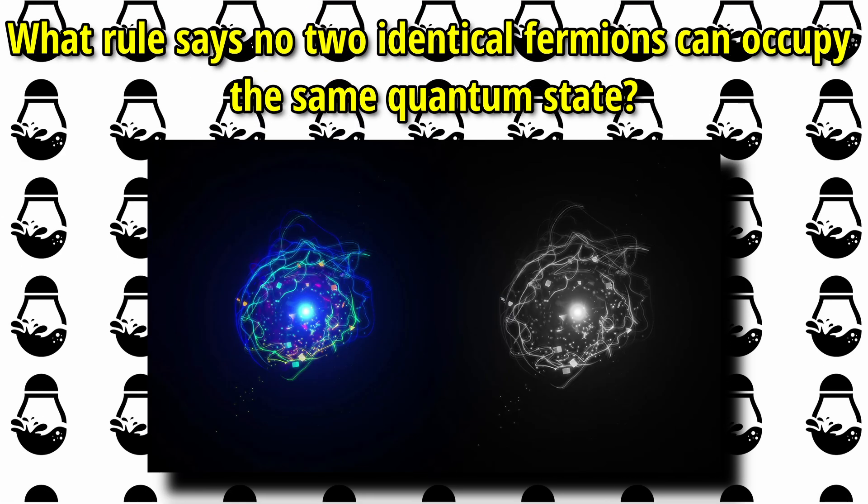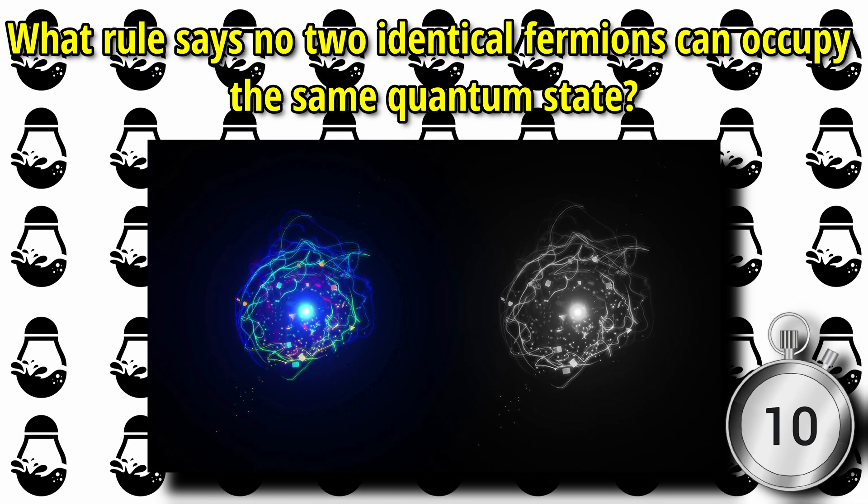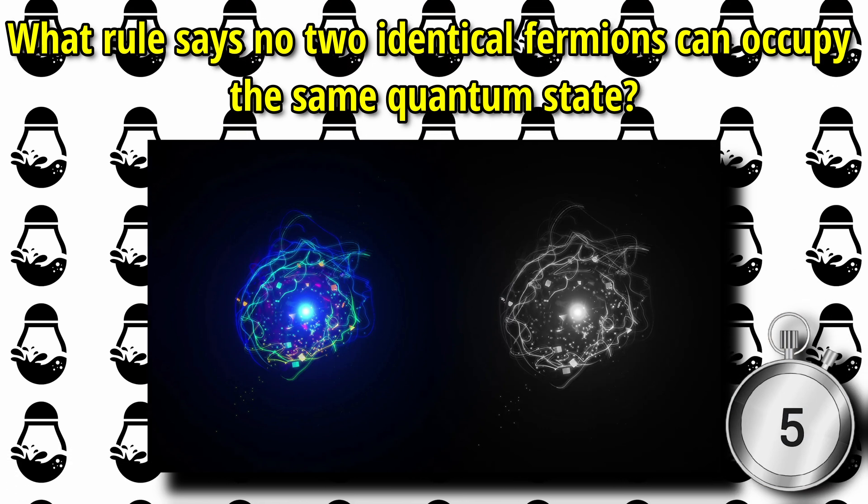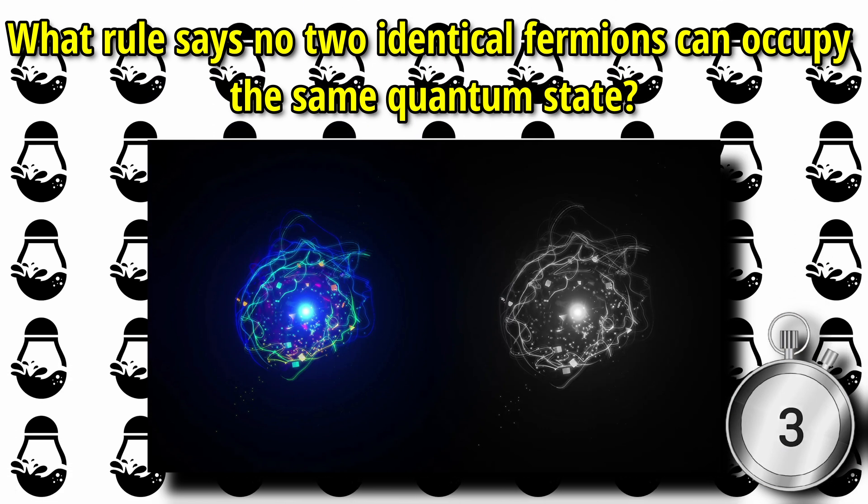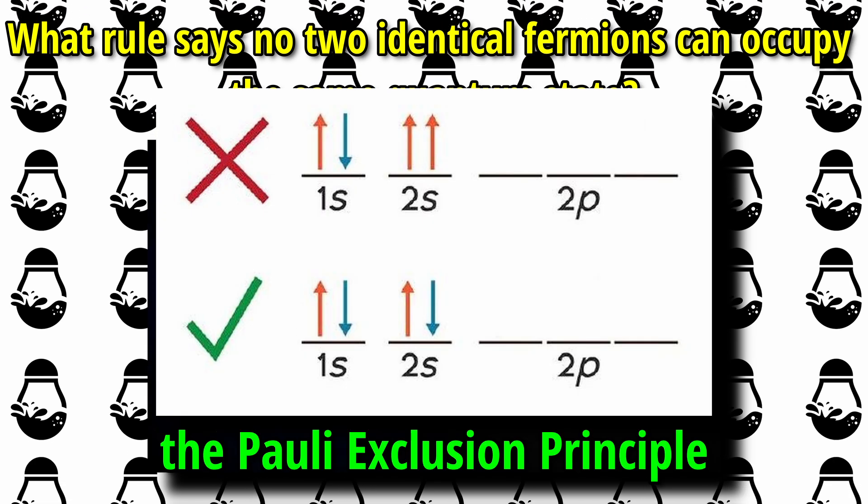Next question. What rule says no two identical fermions can occupy the same quantum state? The answer is the Pauli exclusion principle.